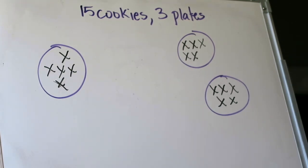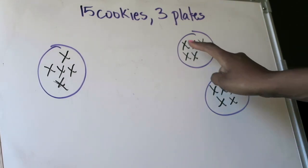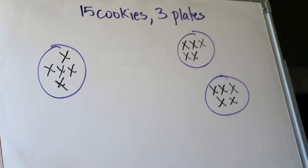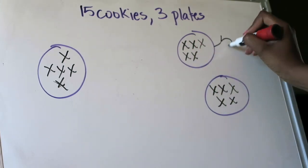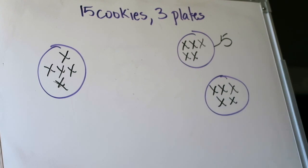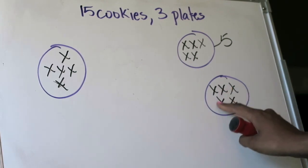So to figure out how big my equal groups would be I'm going to look at my plates and figure out well how many cookies are on each plate. I have one, two, three, four, five there. Okay. I need to make sure I have five in the other two groups as well. One, two, three, four, five. Good.